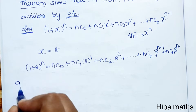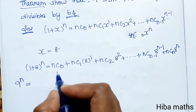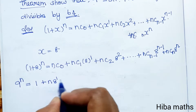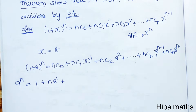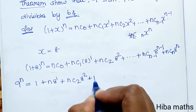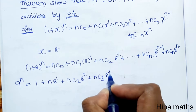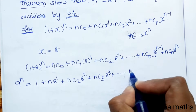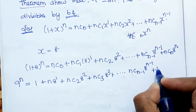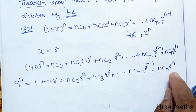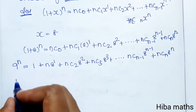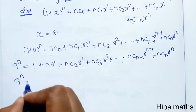Since 1 plus 8 equals 9, we get 9 power n equal to nC0 which is 1, plus nC1 which is n times 8, plus nC2 times 8 power 2 plus nC3 times 8 power 3, up to nC(n-1) times 8 power n minus 1 plus nCn times 8 power n.